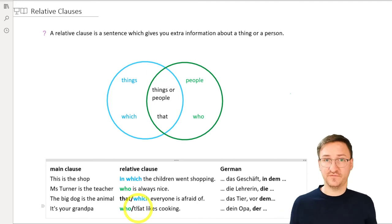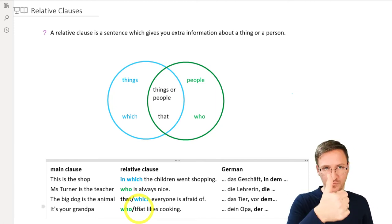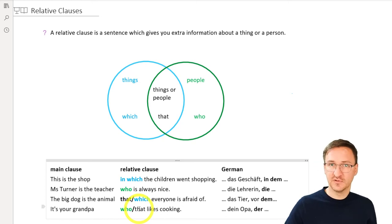We have relative clause. When do we use them? We use them when we want to give extra information on a thing or a person. How do you know that we're using a relative clause? Well, for things, we have which, number one. For persons, we use who, number two. And we can use the relative pronoun that for things and sometimes for persons as well.